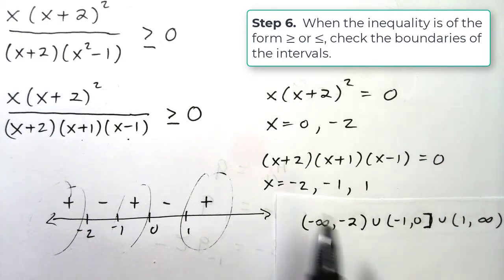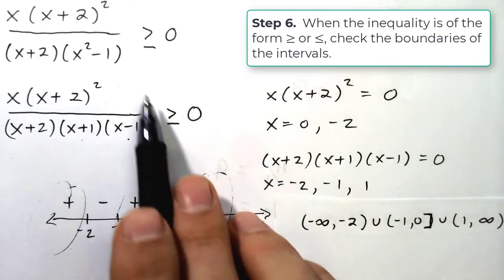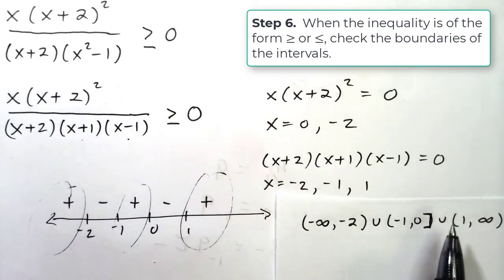And what about one? Well one makes the denominator zero. It's undefined. So it is not part of the solution. So we leave an open bracket here, round parentheses. So that's a way to do it just by looking at the function.